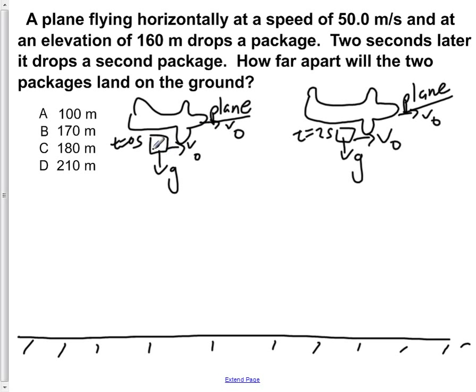So if the plane has an initial velocity of v-naught and the package has a velocity also of v-naught when it's being dropped out, it'll fall straight down. It's going to have no initial vertical velocity, but it's going to have the same horizontal velocity as the plane.